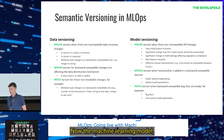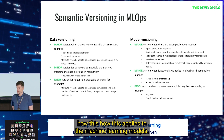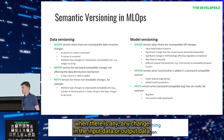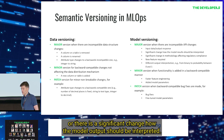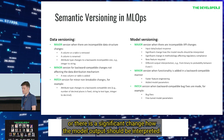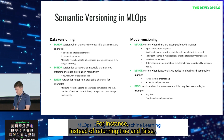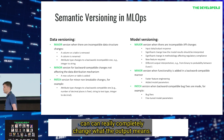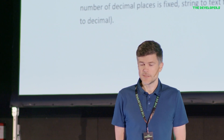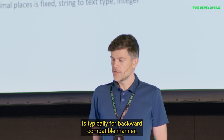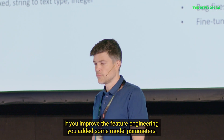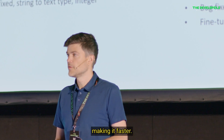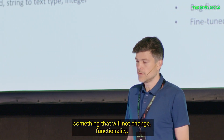For machine learning models: the major version should change when there is any change in the input data or output data, or a significant change in how the model output should be interpreted — for instance, instead of returning true and false, it returns a probability between 0 and 1, which can completely change what the output means for the consumer. The minor version is for backward-compatible improvements — improved feature engineering, added model parameters. Patches are like bug fixes, fine-tuning, making it faster — something that will not change functionality.